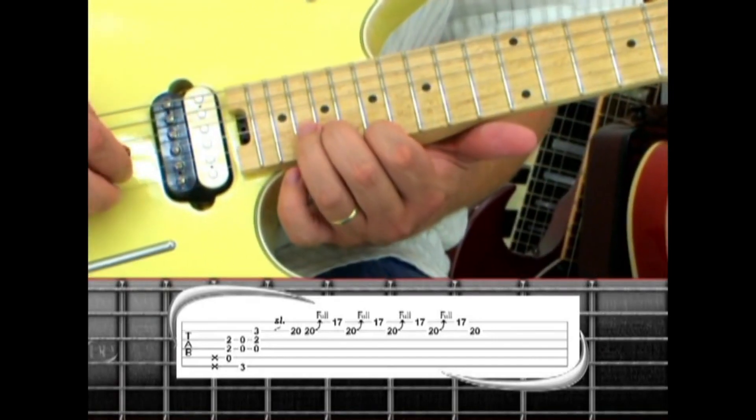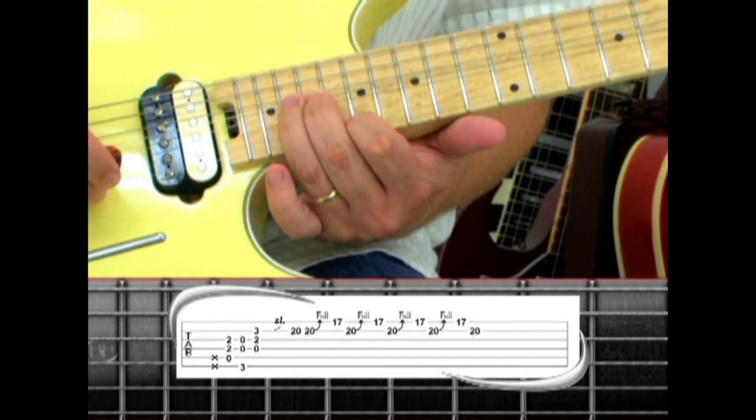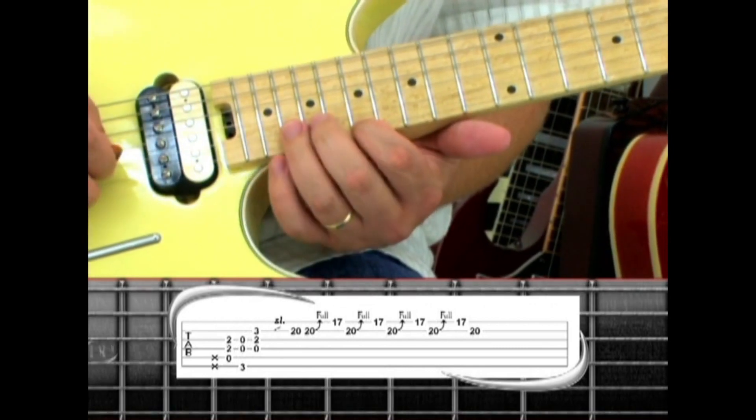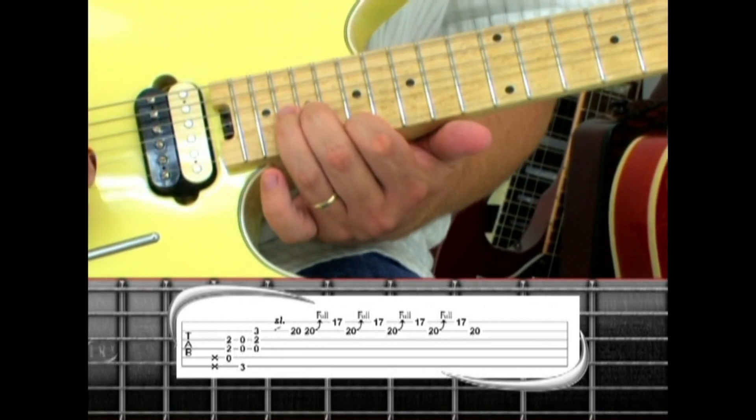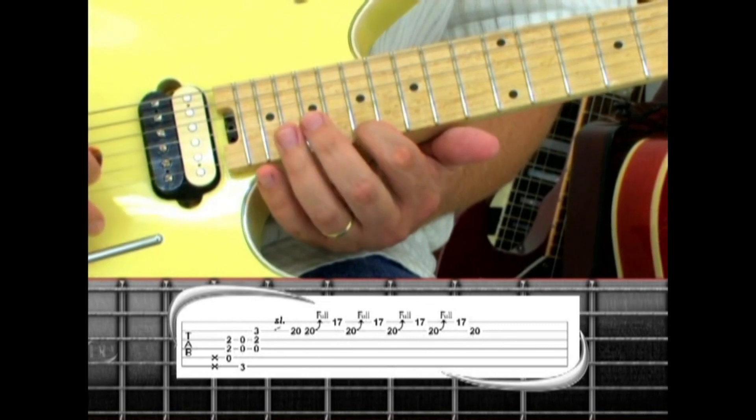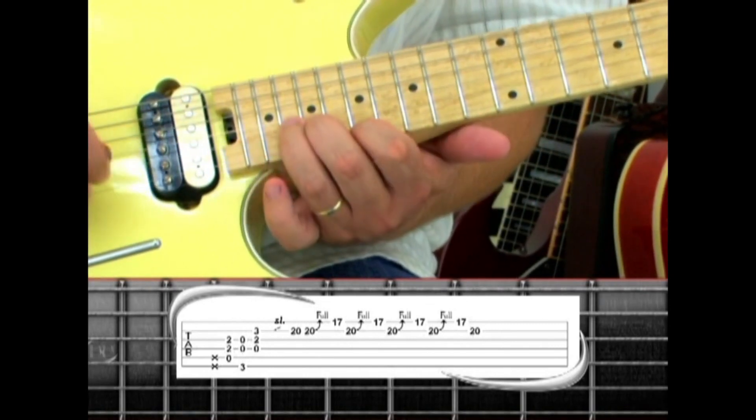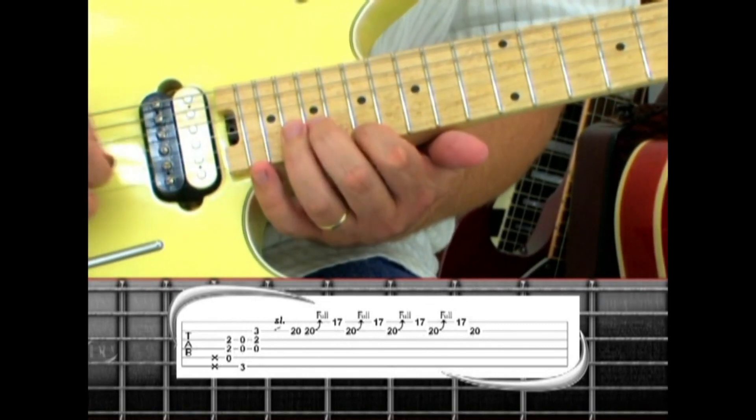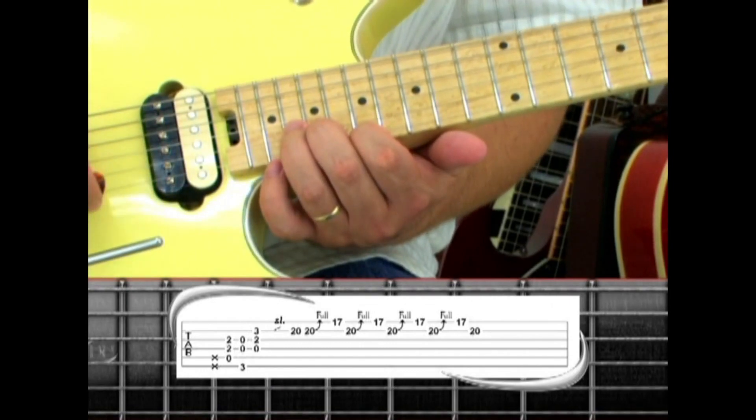Play 20 again with a bend, then first string 17th fret with index finger. Repeat the second string 20, bend to first string 17. Repeat two more times and on the second string 20.